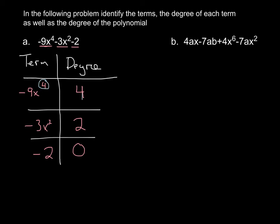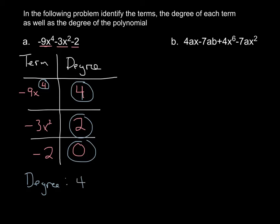Our last step is to look at these three degrees. The degree of the polynomial is going to be the highest of those degrees. So the degree of polynomial A is going to be 4, because that is the highest of any of the terms.